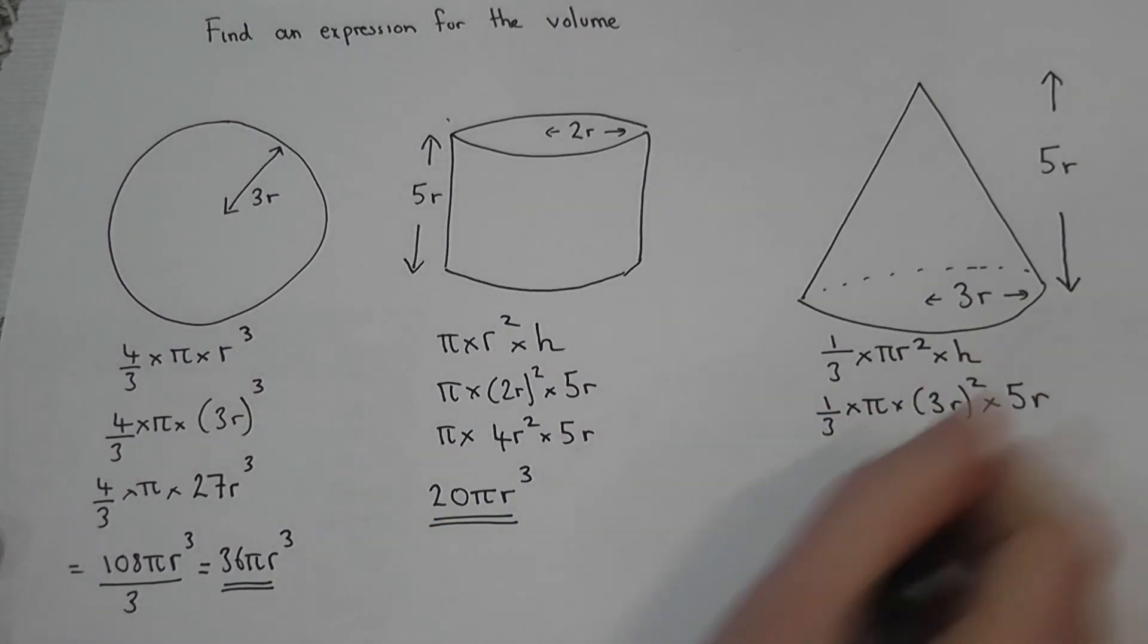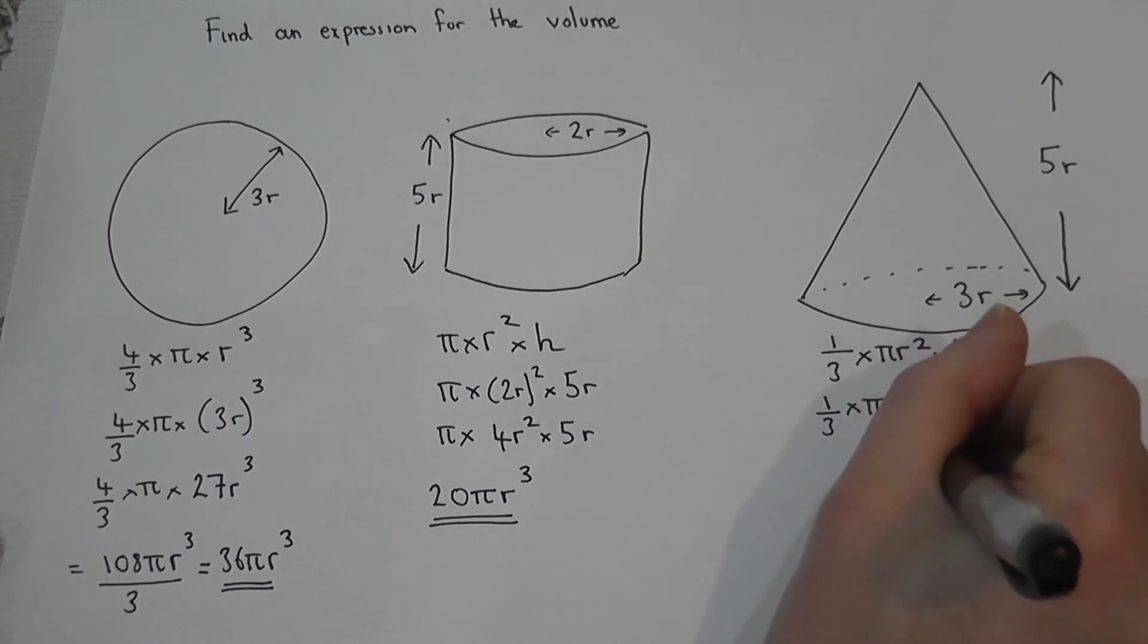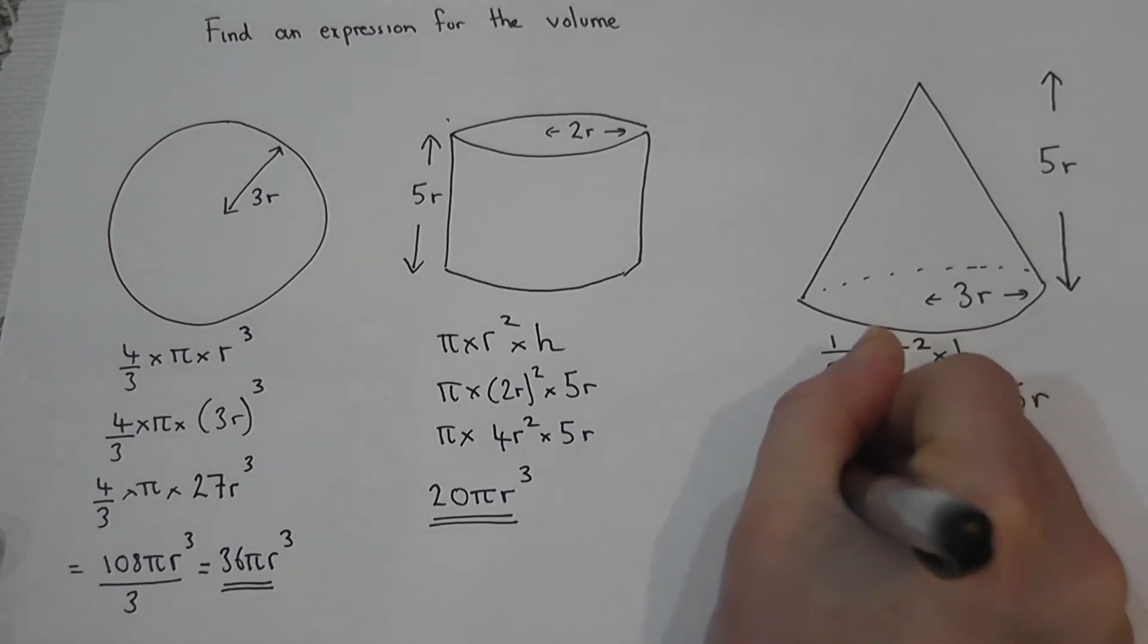As before, we'll do the bracket first. So 3 squared is 9, r squared is r squared. Times by 5r times by pi, times by a third.